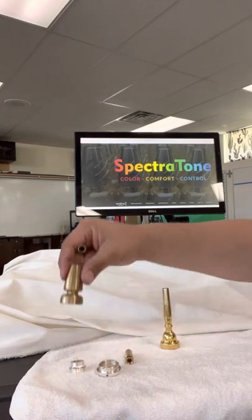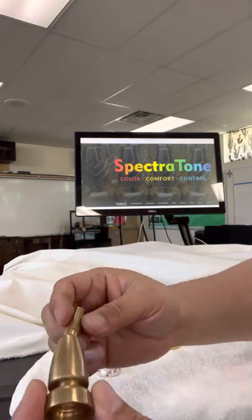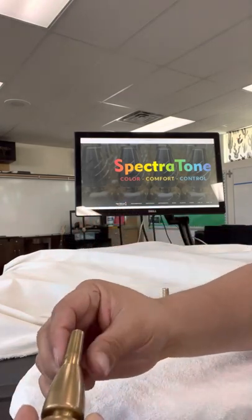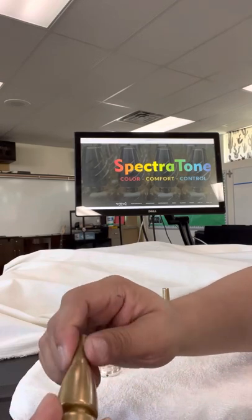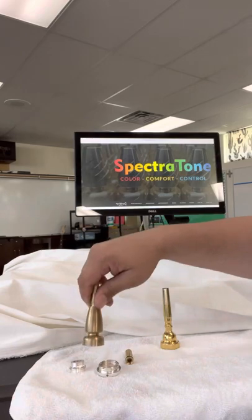So what I usually like to do is put the body and backboard together first. The backboard is number 2133. Screws on, make sure it's screwed on all the way.